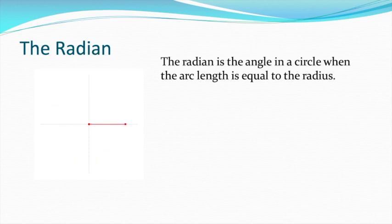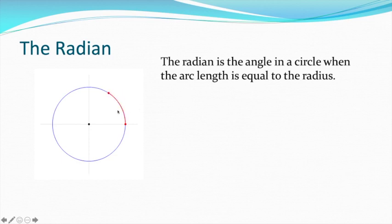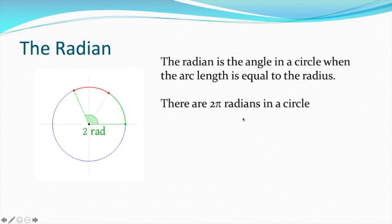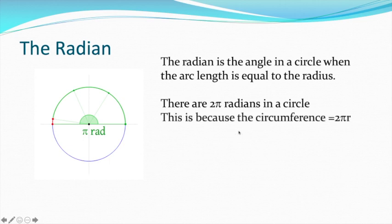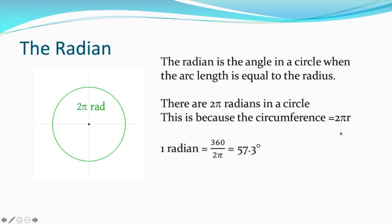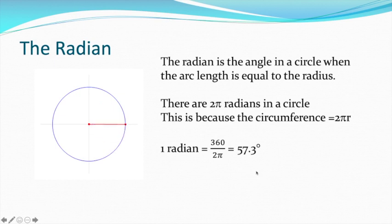So, the radian is the angle in a circle when the arc length is equal to the radius. That green angle is one radian. And because there are two pi radiuses in a circle, there are two pi radians. This radian is an angle. There are two pi radians in a circle because the circumference is two pi radiuses. If you want it in degrees — because a complete circle is 360, and there are two pi radians in a circle — 360 divided by two pi is 57.3 degrees.